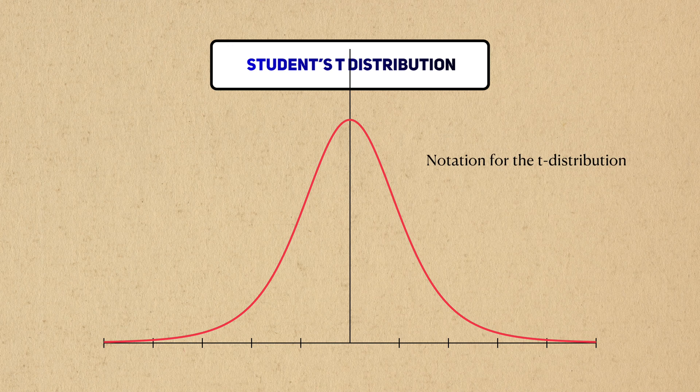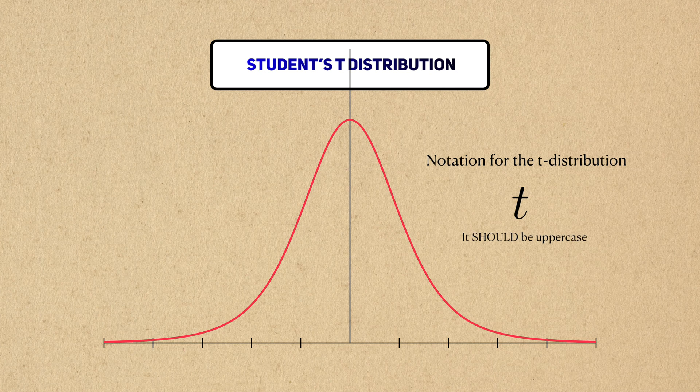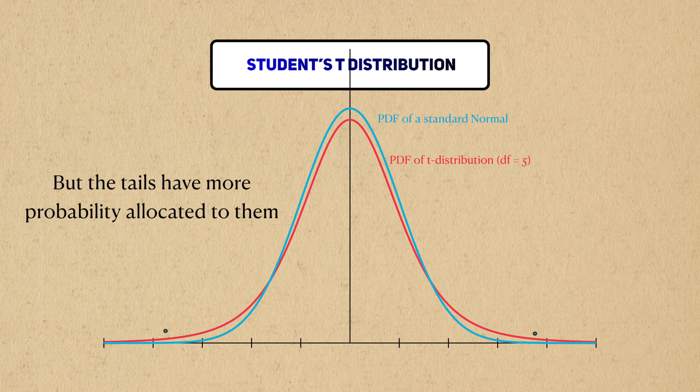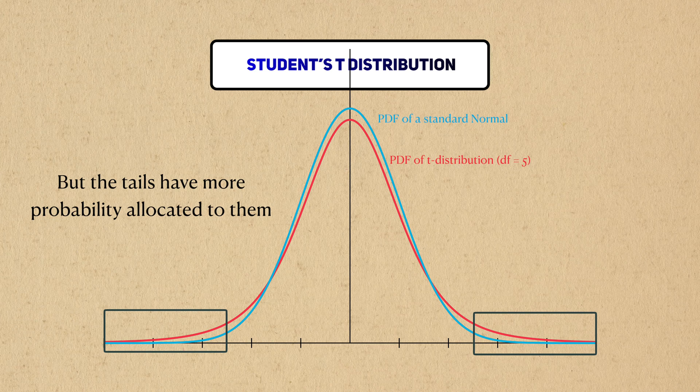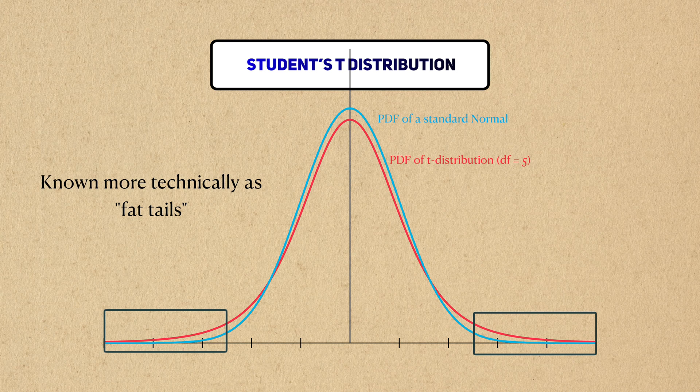In a long list of frustrating notation choices by past statisticians, a t distribution is usually denoted by a lowercase t. The t distribution looks almost like a standard normal distribution, but has more density distributed towards the tails of the distribution. These are also known as fat tails, and they indicate that outliers are more likely in a t distribution than in a normal one.